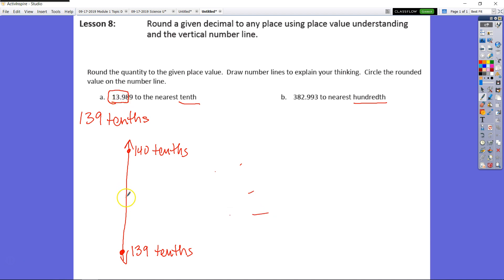And my midpoint is going to fall right in between these and we can keep this as a decimal. 139 tenths and this would be 140 tenths. Alright, so right in between 13 and 9 tenths and 14 would be 13.95 or 13 and 95 hundredths. Remember that would be our midpoint.